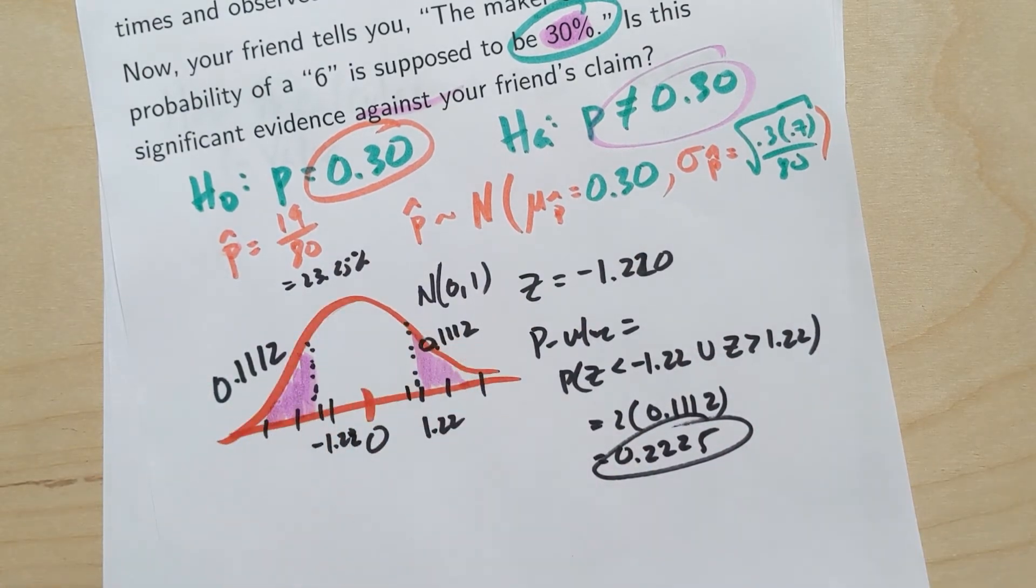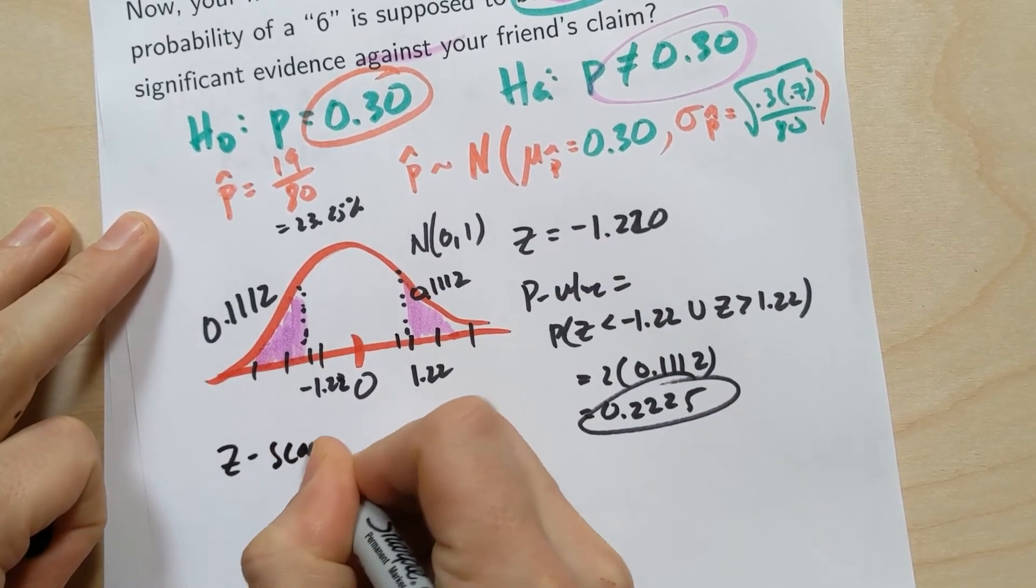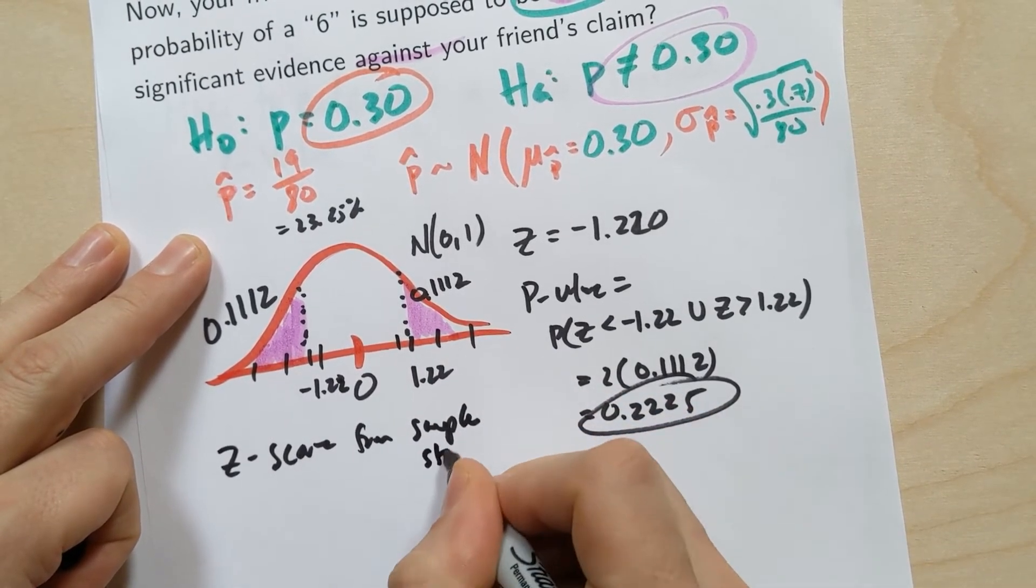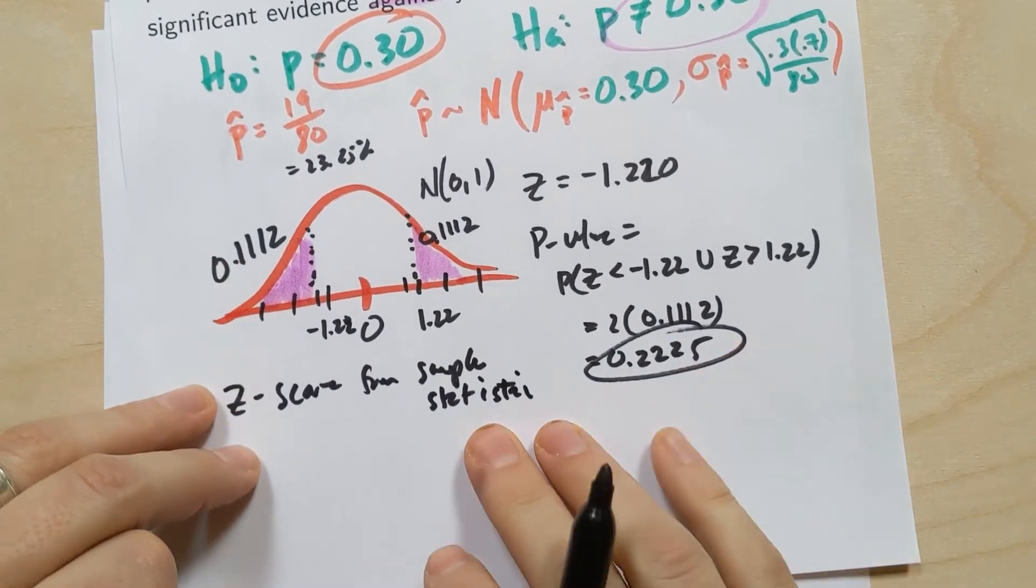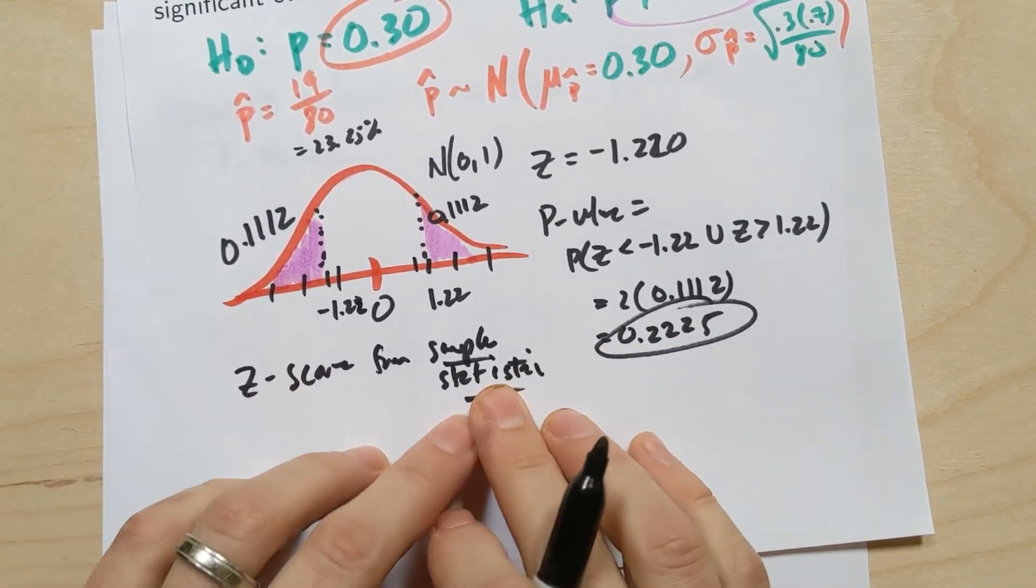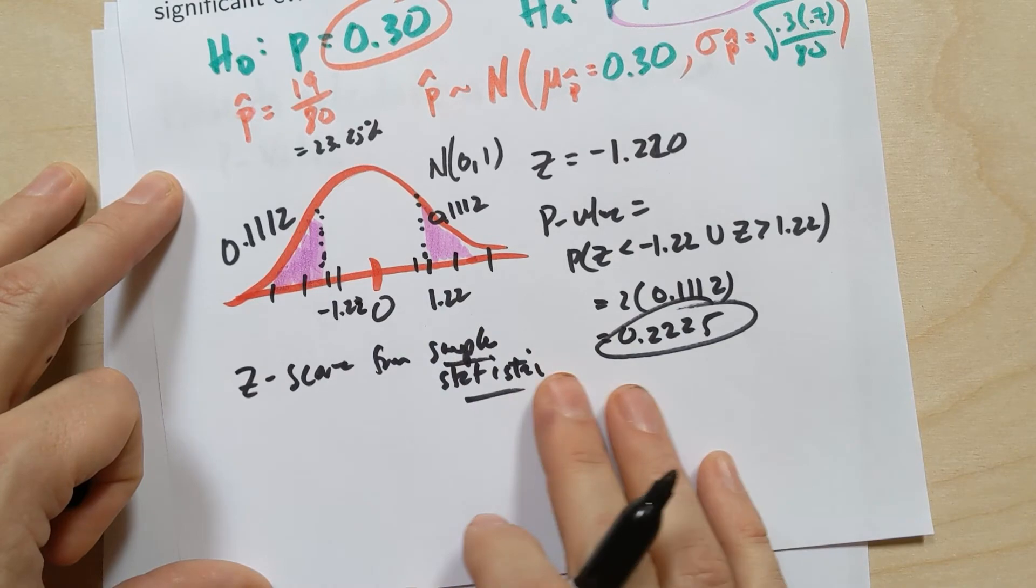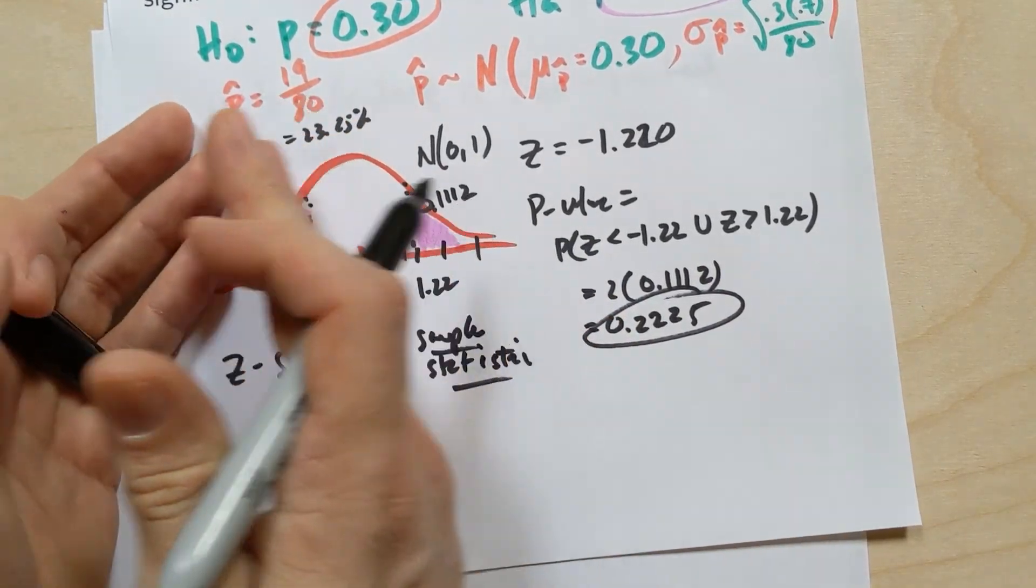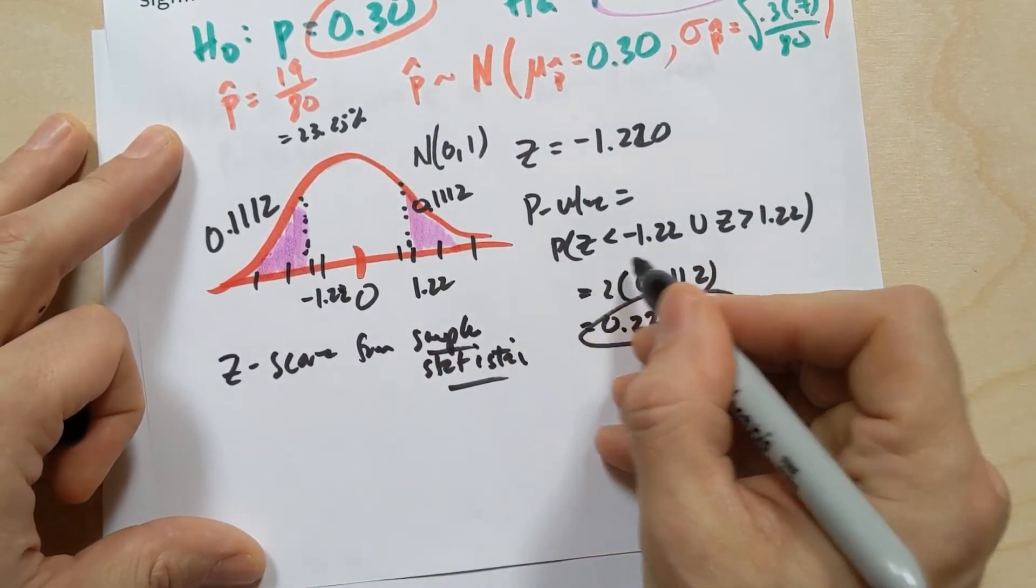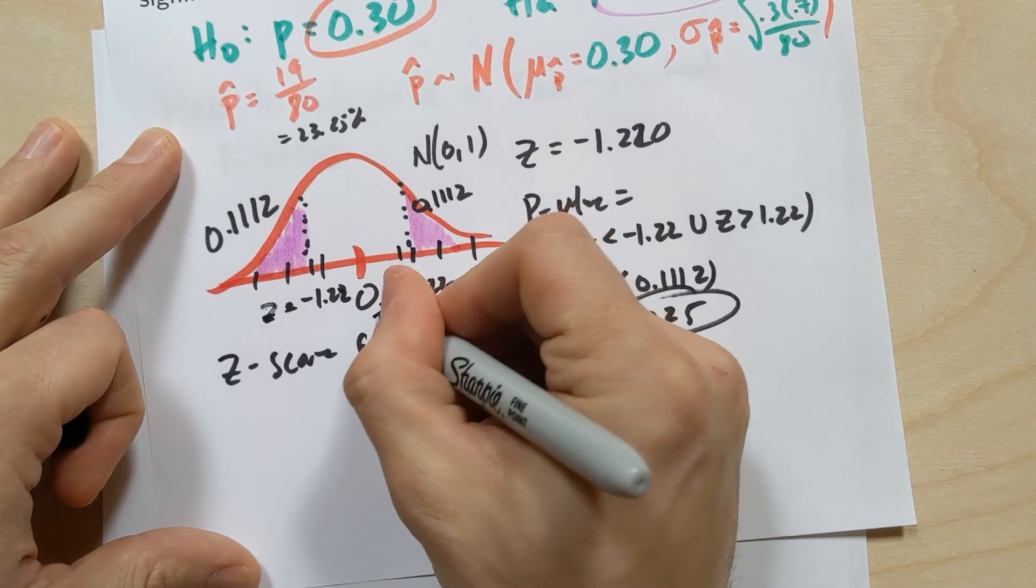So this is what we're going to do every single time when we calculate a two-tailed P value. We'll look at our sample statistic and we'll get the Z score from the sample statistic. In this case, it was again a sample proportion, but when we do sample means or anything else, the same idea, it's all based on that sample statistic. And we'll calculate the probability in the direction of whatever your sample statistic's Z score is. So if you've got a negative Z score, you'll do everything to the left. If you get a positive Z score, you could do everything to the right. And we'll always have the two tails simply by looking at your original Z and then the opposite of your original Z.